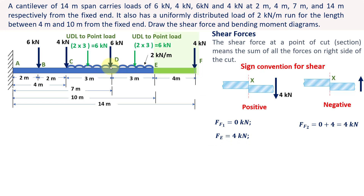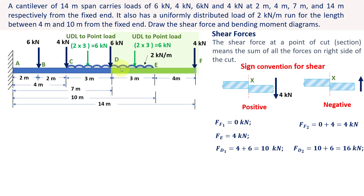Now let us calculate the shear force at D. On the right side of D there are two loads: the 4 kN point load at F and the 6 kN equivalent UDL load from D to E. So SF(D1) = 4 plus 6 = 10 kN. Exactly at D there is also a 6 kN point load, so SF(D2) = 10 plus 6 = 16 kN.